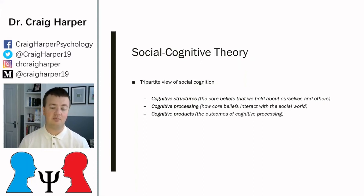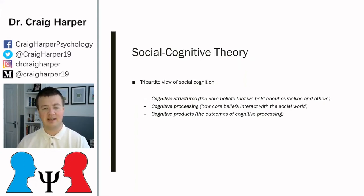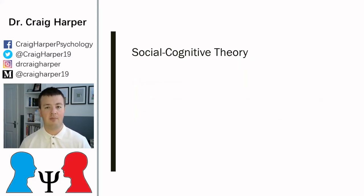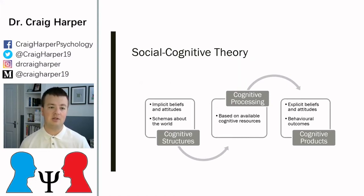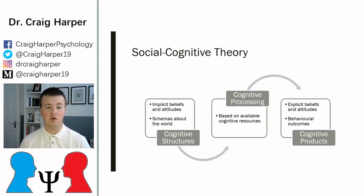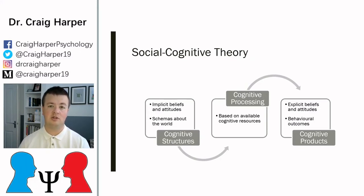The third construct is cognitive products — the outcomes of our cognitive processing. These can be our behaviors, but also explicitly expressed attitudes. Cognitive structures form a key part of our identity in terms of how we view ourselves, referred to as implicit beliefs or implicit attitudes — or what you might call schemas, mental scripts and shortcuts.